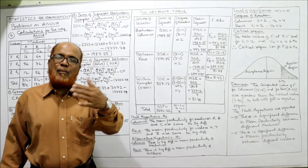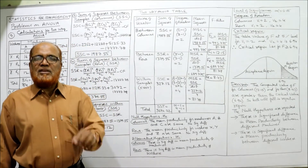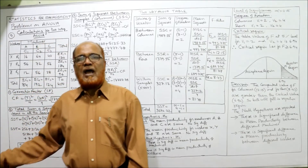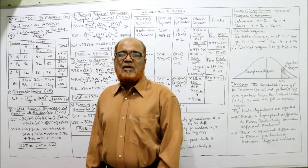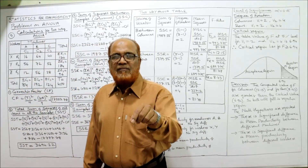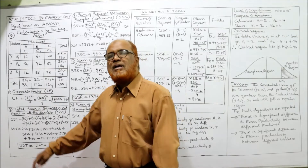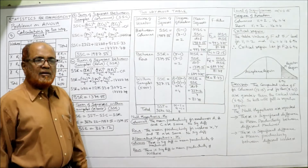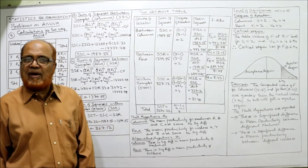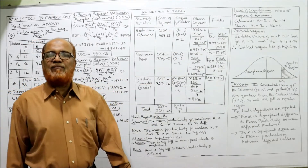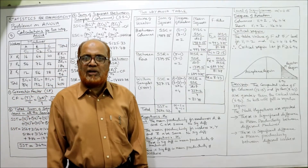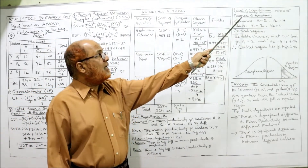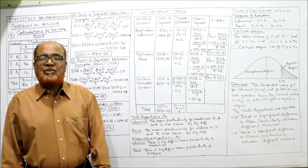Alternative hypotheses: H₁ for columns — there is significant difference in mean productivity among the machines. H₁ for rows — there is significant difference in mean productivity among the workers. Level of significance: α = 0.05 (assumed, as not given in the problem).